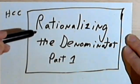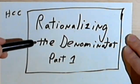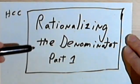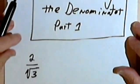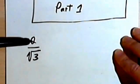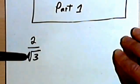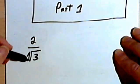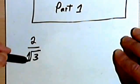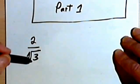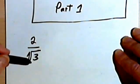This video is going to be about rationalizing the denominator of a fraction. Let's say we have the fraction 2 over the square root of 3. Sometimes in algebra it's useful to not have a square root or a radical in the denominator of a fraction.